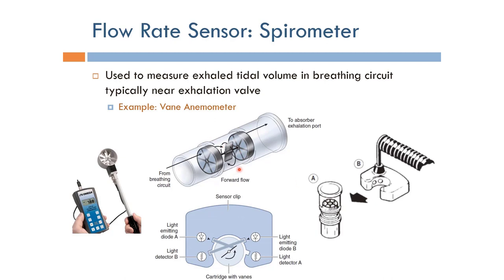We have optical paths going through this piece. Whenever this is in position, the path between this LED and this light detector is cut off. So we keep getting pulses on and off between these two sensors, and based on those pulses we can compute the number of rotations.